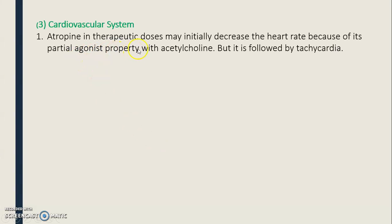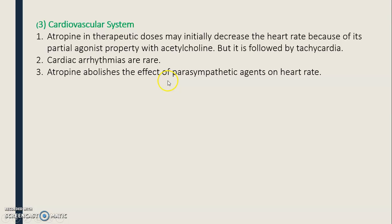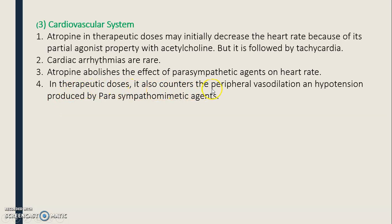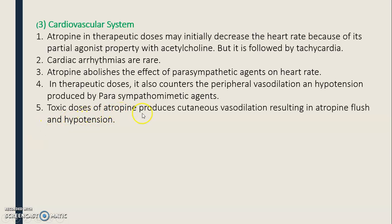Regarding the cardiovascular system, atropine in therapeutic doses may initially decrease the heart rate due to its partial agonist property with acetylcholine, but this is followed by tachycardia. Cardiac arrhythmias are rare. Atropine abolishes the effect of parasympathetic agents on the heart and counters peripheral vasodilation and hypotension produced by parasympathomimetic agents. Toxic doses of atropine produce cutaneous vasodilation resulting in atropine flush and hypotension.